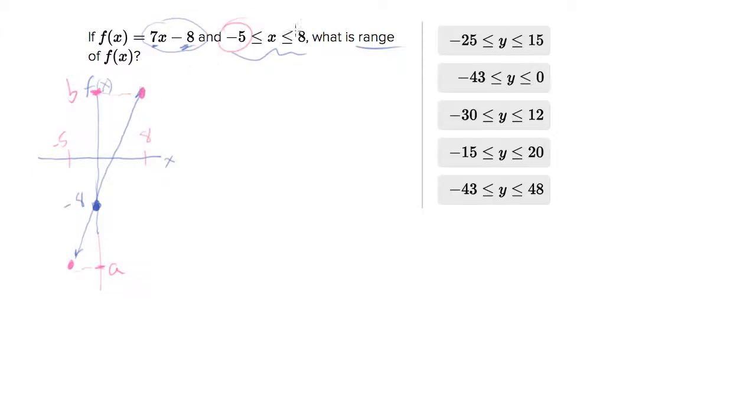All we really need to do is plug in these extremes. We need to plug in negative 5 and plug in 8 and see what we get out. If I plug in negative 5, I get 7 times negative 5 minus 8, which is equal to negative 35 minus 8, which is equal to negative 43. So we're talking about one of those two answer choices right there.